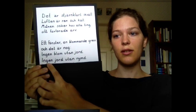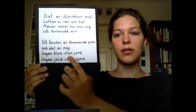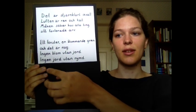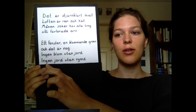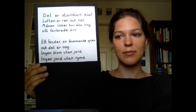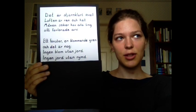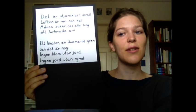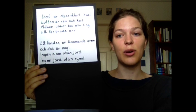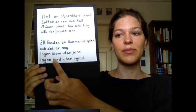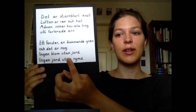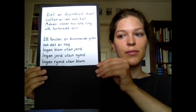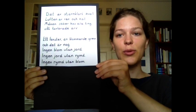And no earth without rymd — that is 'space'. Ingen jord utan rymd — 'no earth without space'. And I'm not going to translate the last sentence, because you are going to translate it yourself, since you already know all the words in it. Ingen blomm utan jord. Ingen jord utan rymd. Ingen rymd utan blomm.